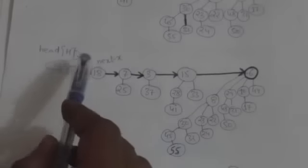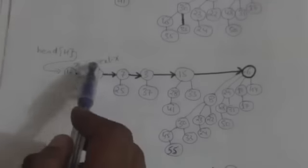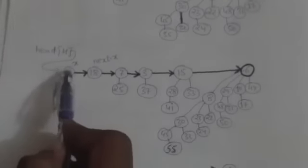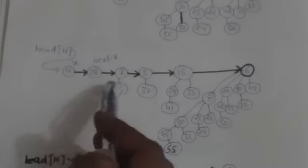Now we will use these rules to link the roots of this root list that have the same degree, so that at most one root remains of each degree. First, pointer x points to the first root of this root list. It doesn't have any predecessor, so pointer previous x is set to nil. Pointer next x points to the root following x in the root list. Sibling of next x is this root.